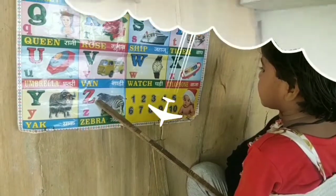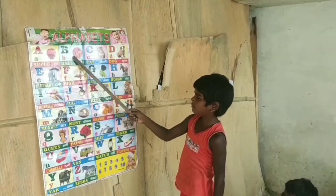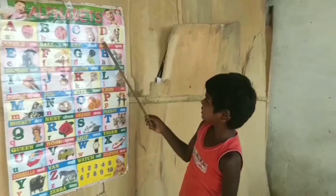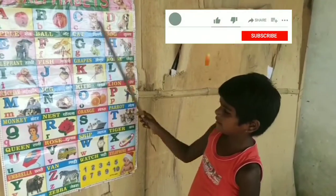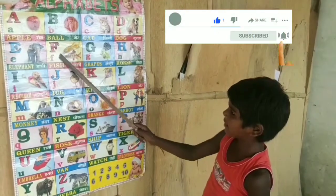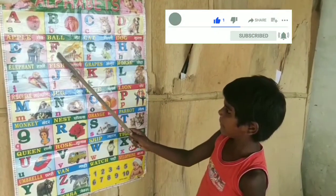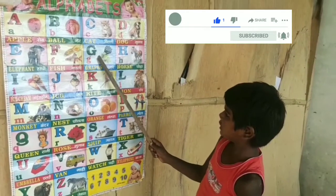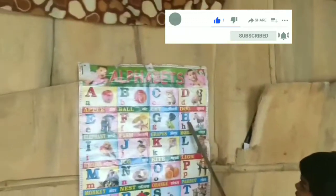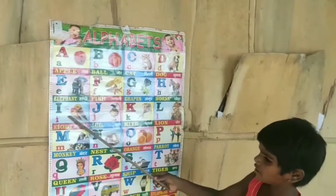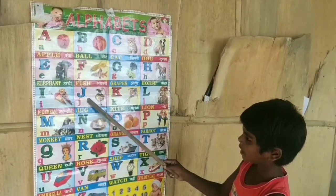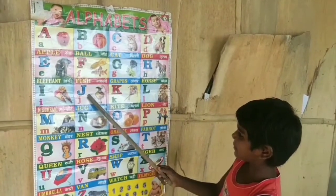A for apple, B for bar, D for bird, C for kite, D for die, D for elephant, D for fish, D for grass, D for horse, I for ice cream, D for jag.